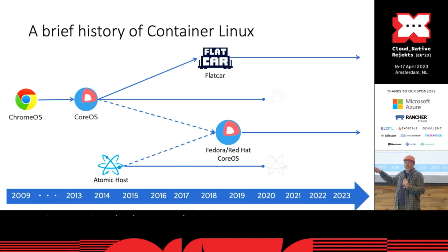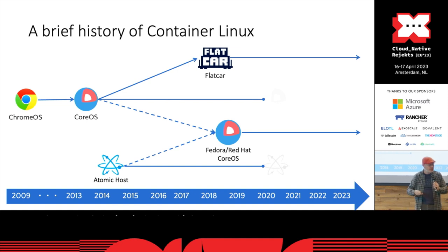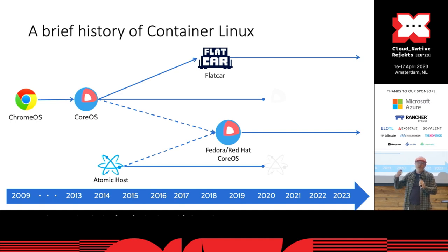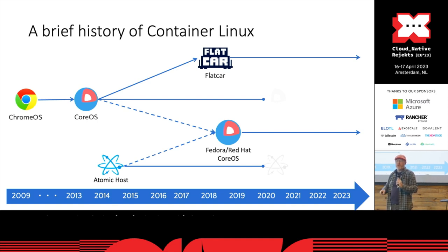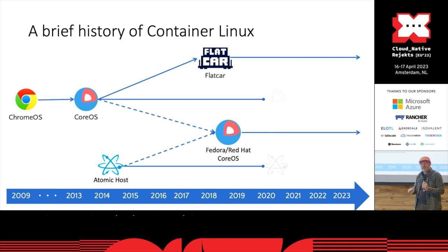Where Flatcar came from actually goes back a long way, all the way back to Chrome OS. Google had the idea of making desktops really simple with immutable and automatic updating capabilities. CoreOS turned that into an OS for servers. And then when CoreOS was acquired by Red Hat, the team at Kinvolk decided to create Flatcar as a friendly fork of CoreOS, in case the original CoreOS might get end of life — which ended up happening pretty quickly. So Flatcar continued as an independent project, compatible with and taking forward the original CoreOS Container Linux.